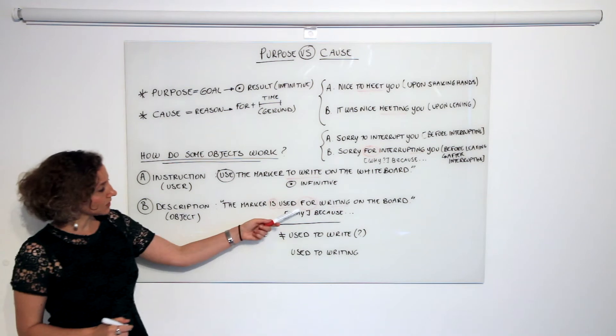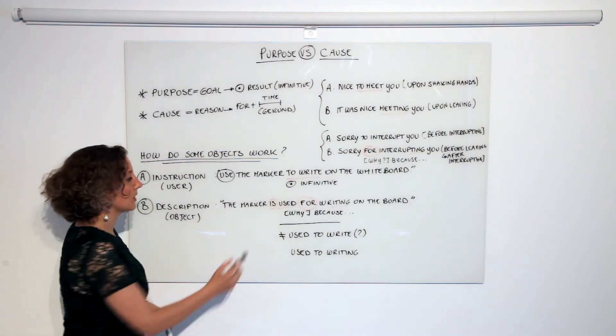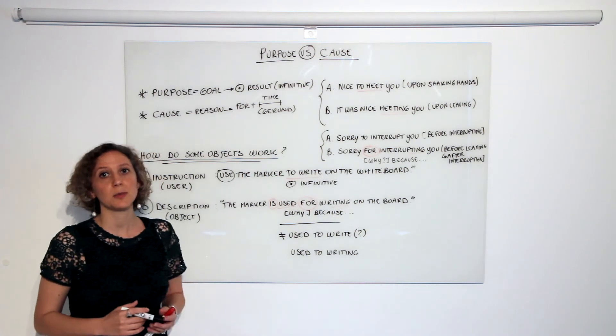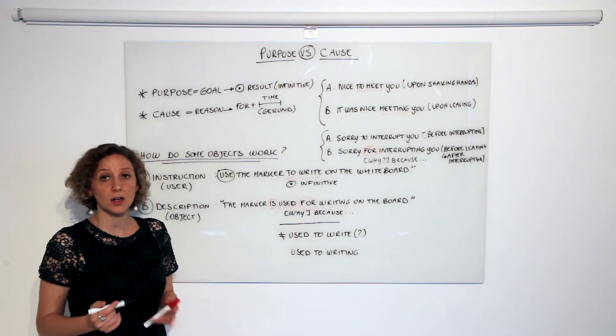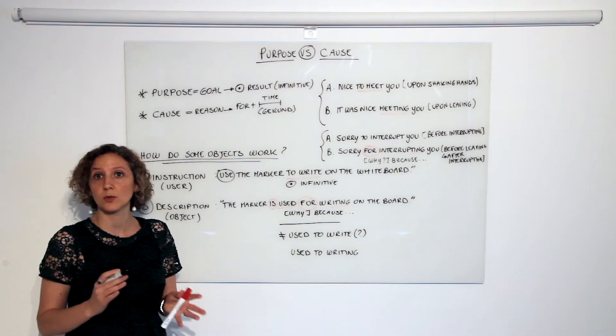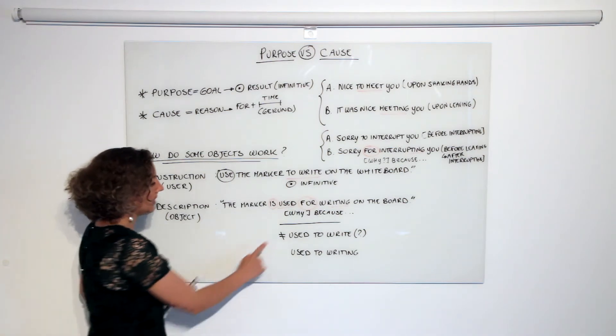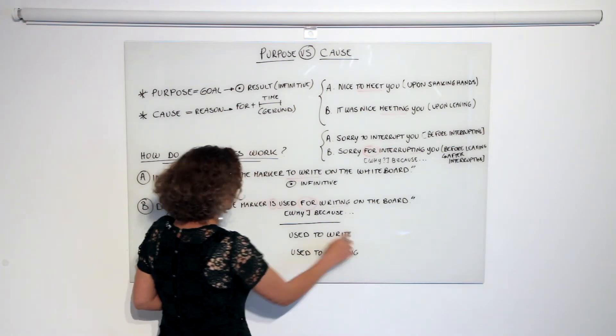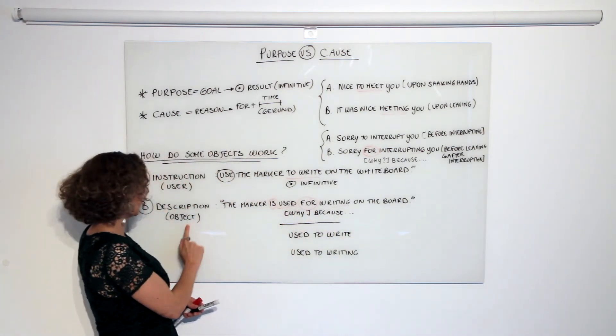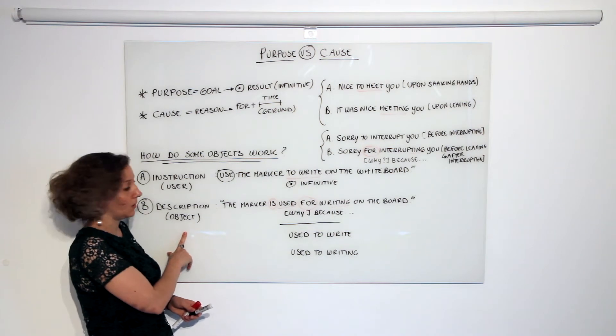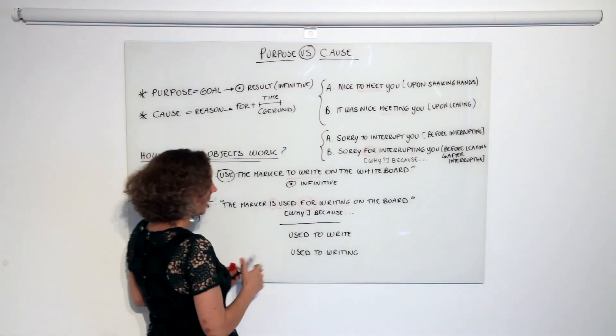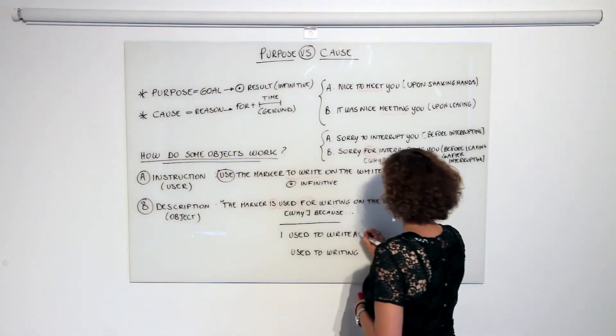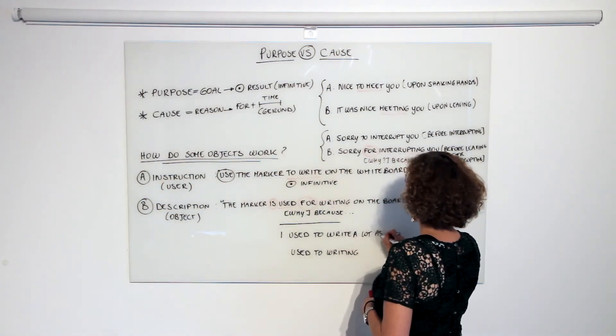Now let's also have a look at the difference between 'used for doing' and 'used to do,' because even native speakers sometimes have a hard time understanding when to use which one. 'Used to write' - I wouldn't use it in a context like this where I'm explaining or describing how an object works, but I would use it in a context like 'I used to write a lot as a child.'